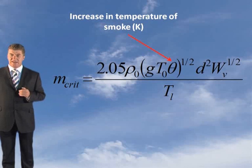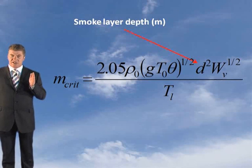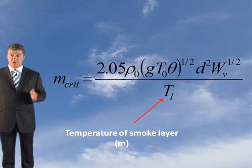Your theta is your increase in temperature of smoke, your D is your smoke layer depth, TL is the temperature of the smoke layer.